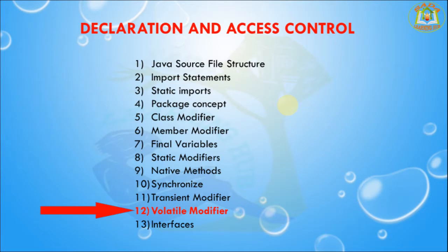Next I am going to discuss about the Volatile modifier. Volatile is a modifier applicable only for variables but not for classes and methods. If the value of a variable keeps on changing, such variables we can declare with the volatile modifier. If a variable is declared as volatile, then for every thread a separate local copy will be created by JVM.